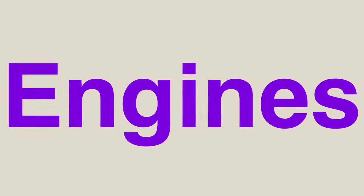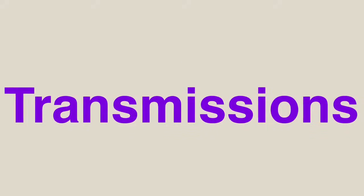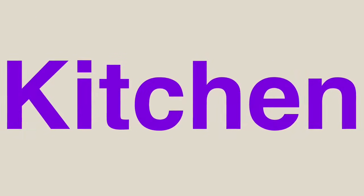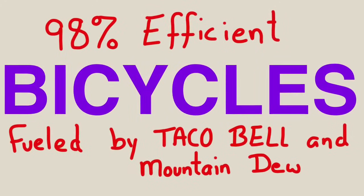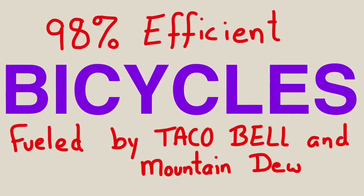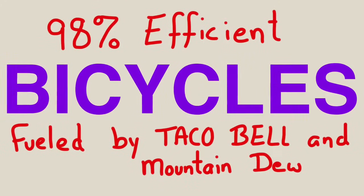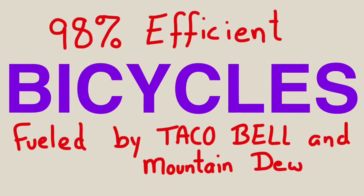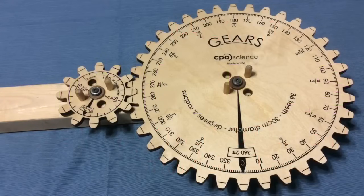Gears. You'll find them in your engines, in your transmissions, in your shop tools, in your toys. They're located in your garage, your shed, even your kitchen. But perhaps most importantly, you'll find them in your bicycles. Always remember, especially when driving your Prius, that the bicycle is the most efficient form of transportation that we have, fueled by simple things like Taco Bell and Mountain Dew. But anyway, let's learn physics.